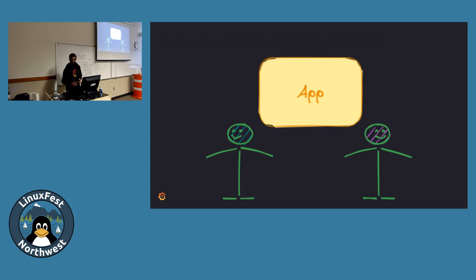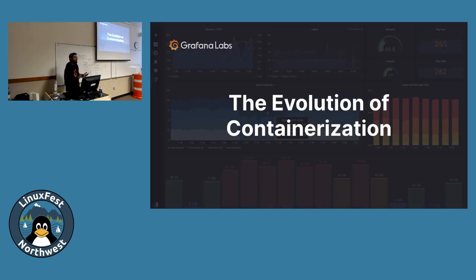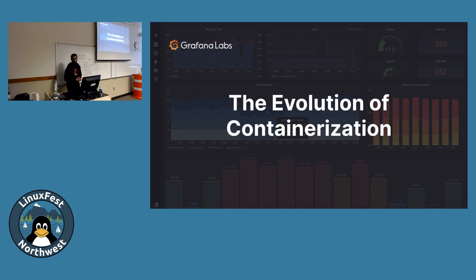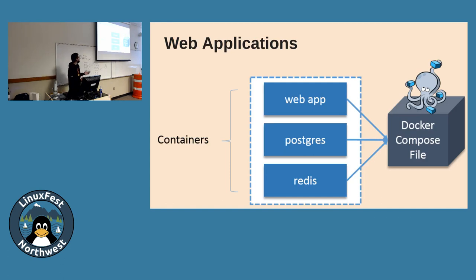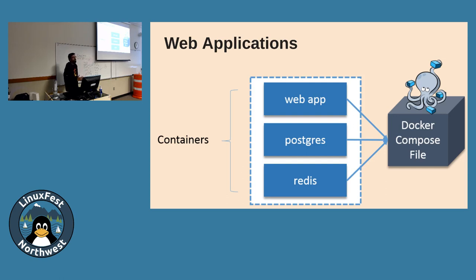Then technologies got involved and we came to the world of containerization, which mostly started from Docker. Docker solves a lot of challenges — you don't need so many virtual machines. All you need is one machine where you can deploy a web application, your database, your cache server, and so on. Docker solves most things: you use a Dockerfile, build your own image, and so on.